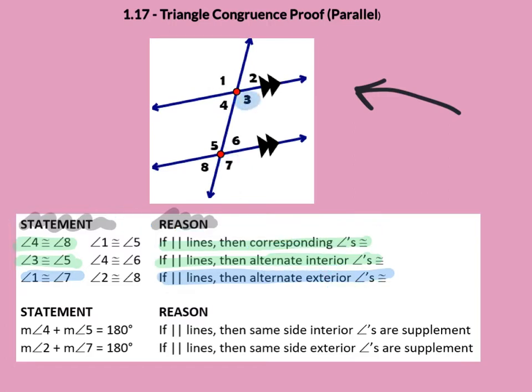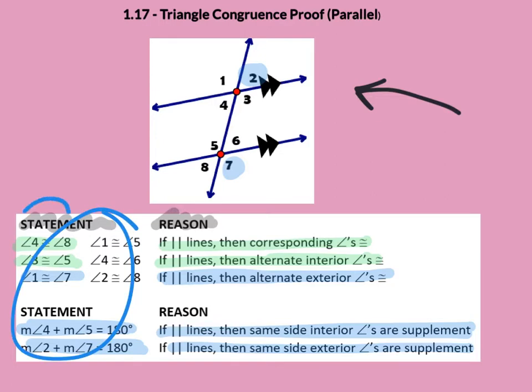You could also state that angles 3 and 6 together are supplements, or that 4 and 5 are supplements, because same side interiors are supplements. Similarly, angles 2 and 7 equal 180 degrees because they are same side exteriors. These are your statements and how you write your reasons.